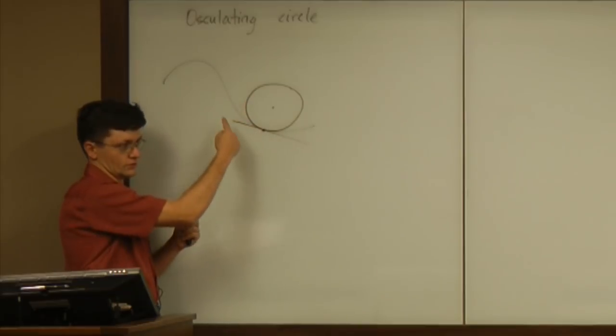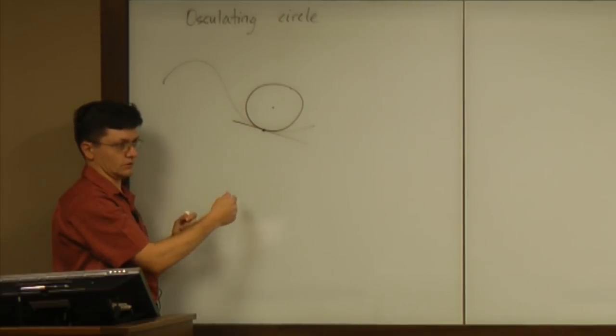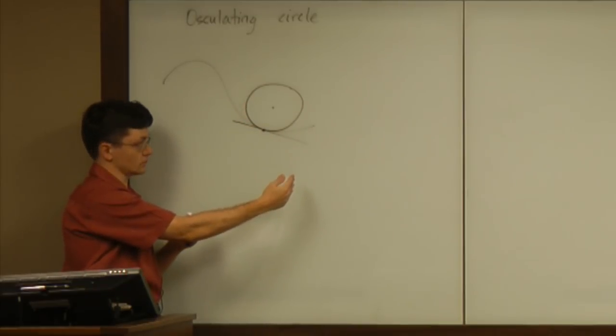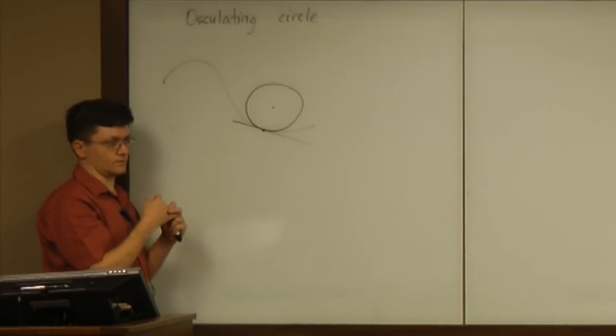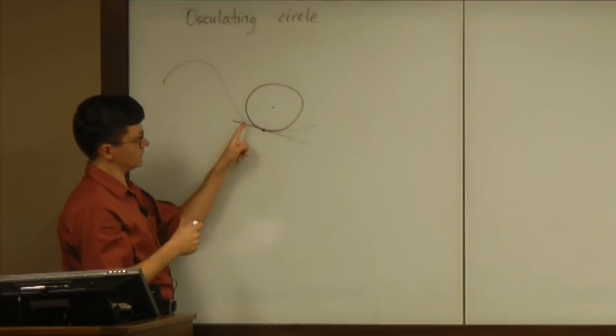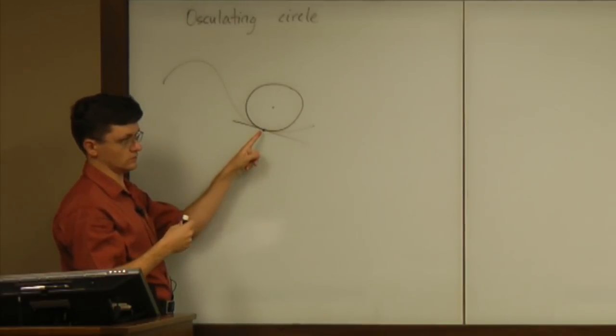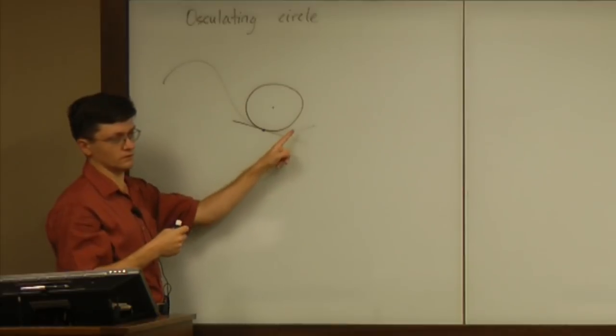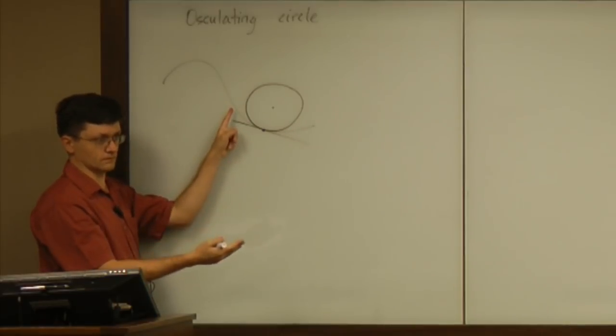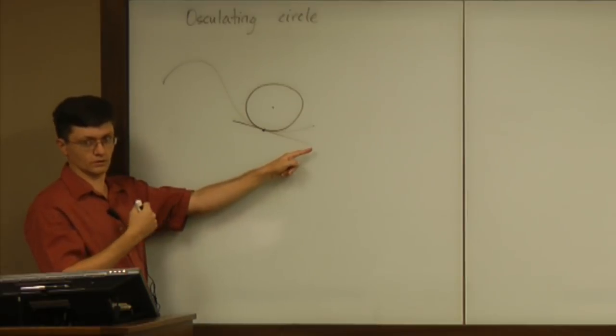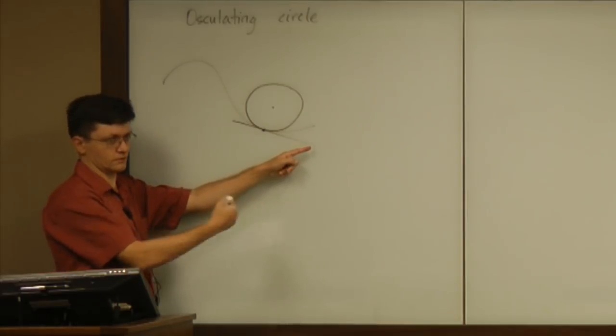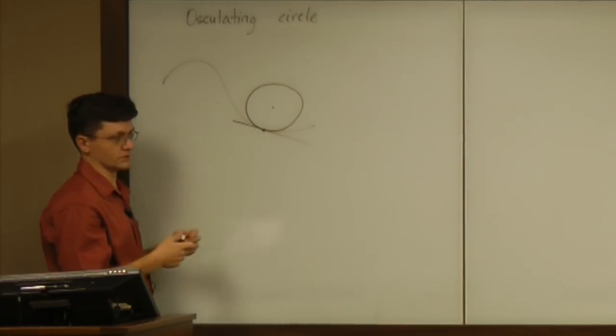And then, the fact that the curvatures are the same amounts to the claim that the second degree terms for these two terms coincide. So, in terms of Taylor series, the best circle is matching the curve up to degree two, as opposed to the tangent line matching only up to degree one. So it's just the next degree of approximation.